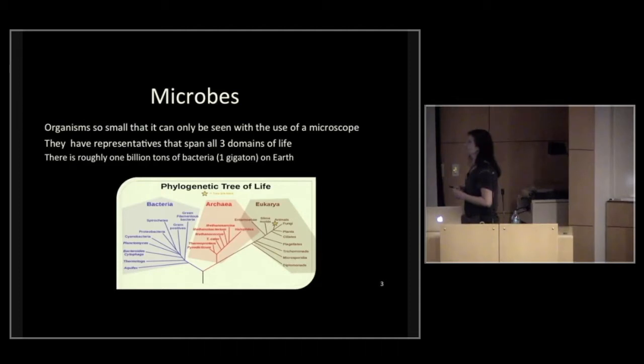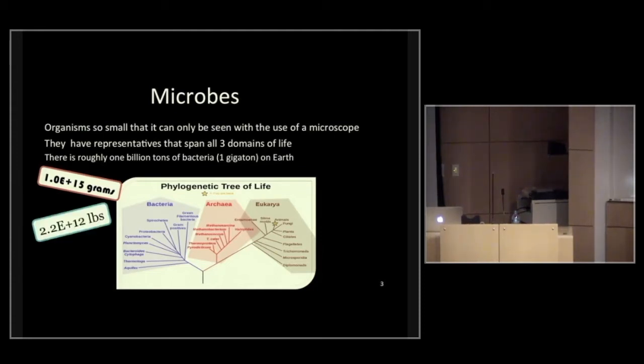Something you might not have known: there's roughly one billion tons of bacteria on Earth. That's a gigaton of carbon. To give you another perspective, I decided to put these in different units. That's 1 times 10 to the 15th grams, or since we're all American, we'll put it in pounds. That's 2.2 times 10 to the 12th, or 2.2 trillion pounds.